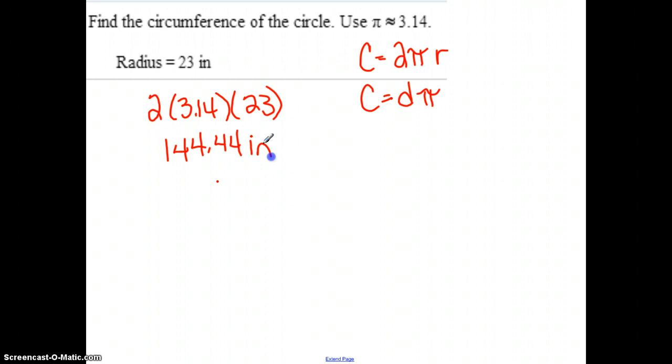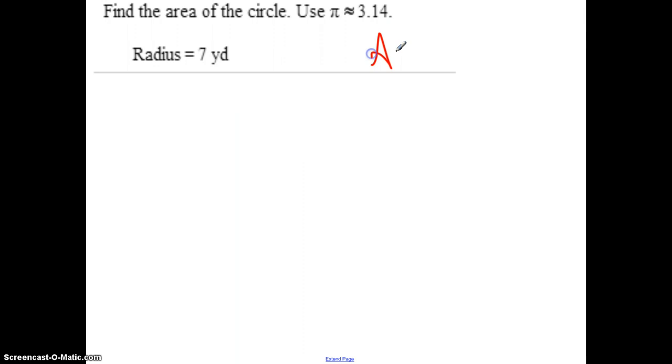Area is pi times radius squared. So in this one, it would be pi, which is 3.14, times the radius, which is 7 squared. Multiplying all those together, I end up with 153.86 yards squared.